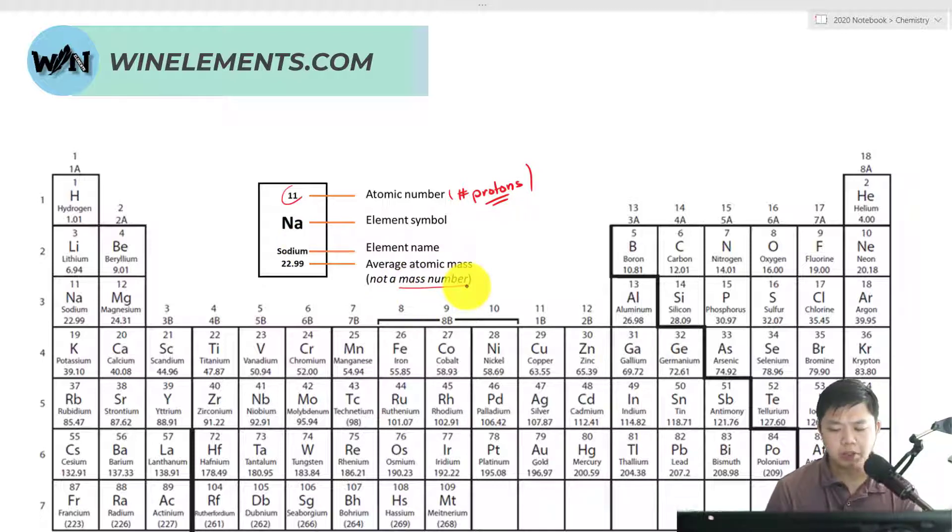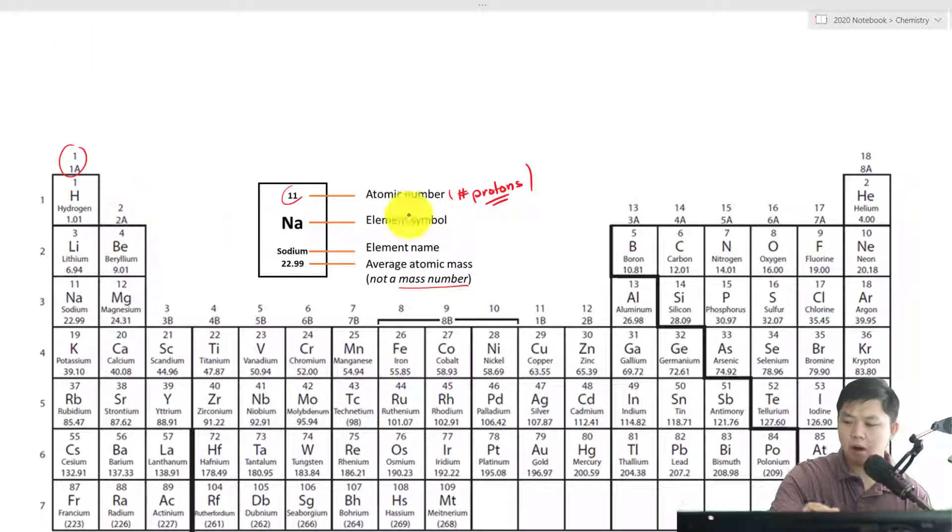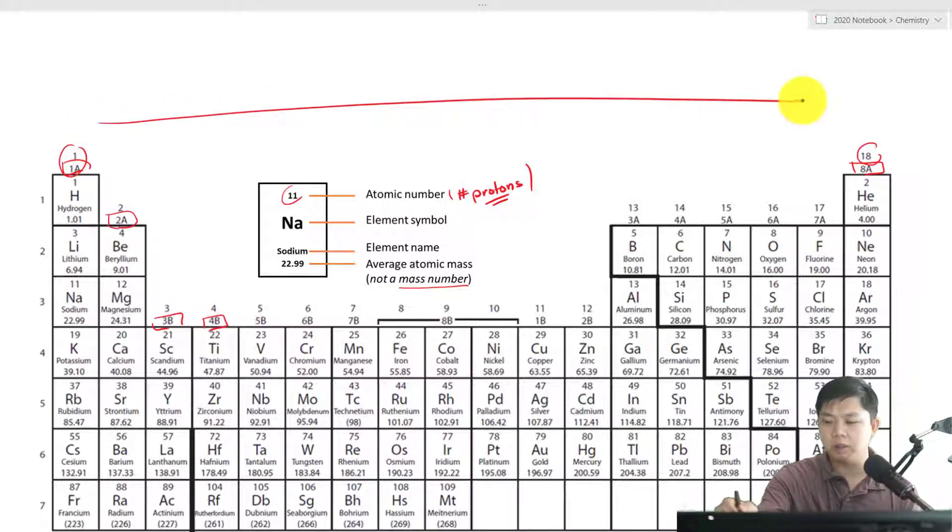Now let's look at other information that we can learn from the periodic table. If you notice, we have groups all the way to group 18, but right below it, we have 1A all the way to 8A. We consider the A groups as the representative groups, and then down here we have the transition groups. We are going to learn about that later, but going across, what do we have here?